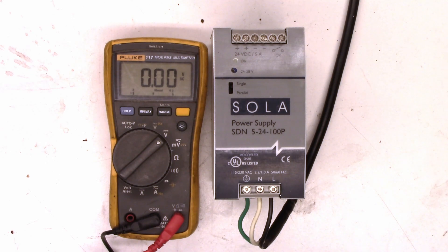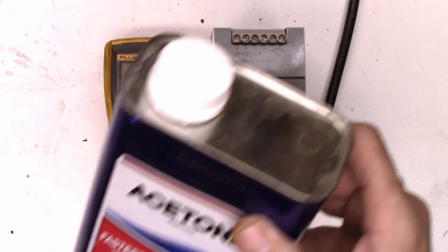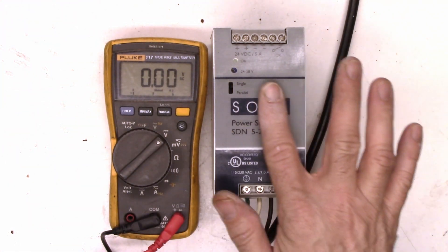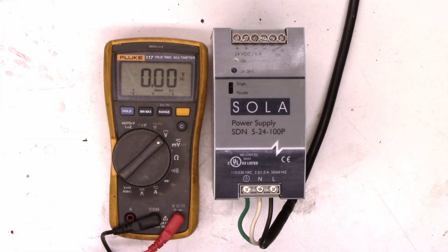Alright, so here it is, all back together. I've even taken my solvent of choice, acetone, and removed the bad sharpie from the front of it. So it looks good again. Let's power it up. Power on.